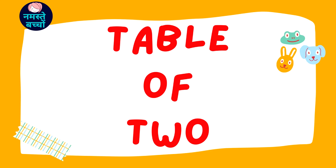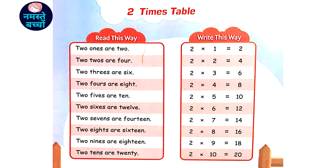Table of 2. 2 1's are 2, 2 2's are 4, 2 3's are 6, 2 4's are 8, 2 5's are 10.